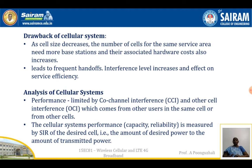The disadvantages are: higher hardware cost, frequent handoffs, increased interference, and reduced service efficiency. In the analysis of the cellular system, performance is limited by co-channel interference and other channel interference coming from users in the same cell or from other cells. The capacity and reliability of the cellular system is measured by the signal-to-interference ratio (SIR) of the desired cell.